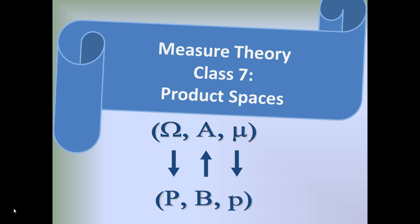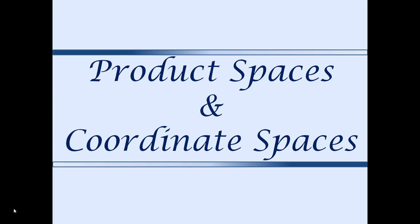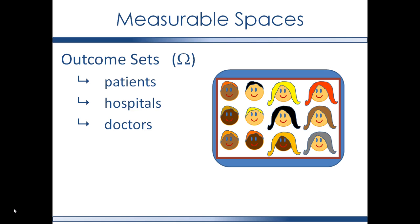This is measure theory class 7, on product spaces and coordinate spaces. So far, the outcome sets in our measure spaces or probability spaces have been relatively simple — for example, outcome sets consisting of patients, hospitals, or doctors. But what if you need to work with an outcome space that is more complex?